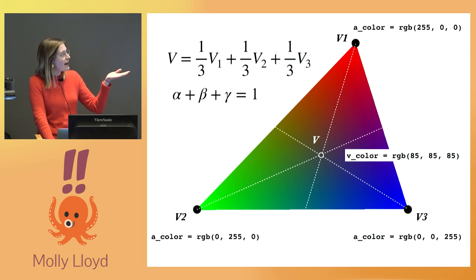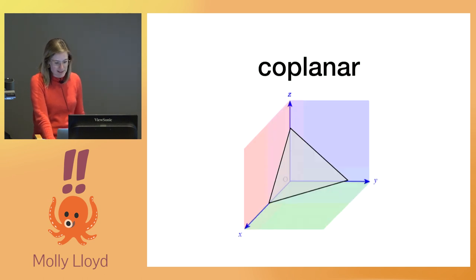And so the color at that pixel is, you know, a third of each of the colors summed up all together. And the math involved in describing and proving barycentric coordinate system is very cool, but I don't have time, and I'm also not qualified to go into more detail on that.